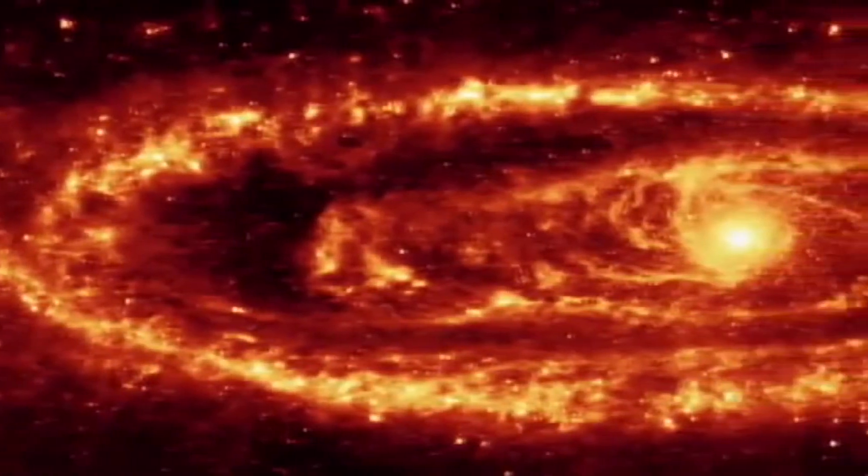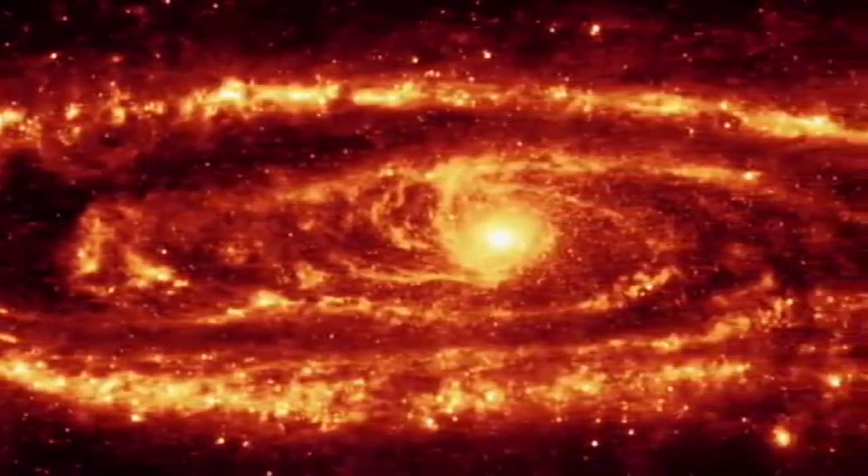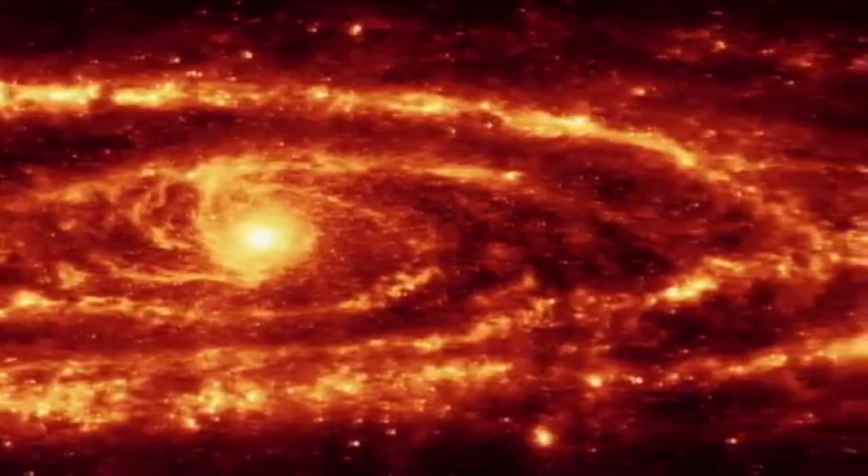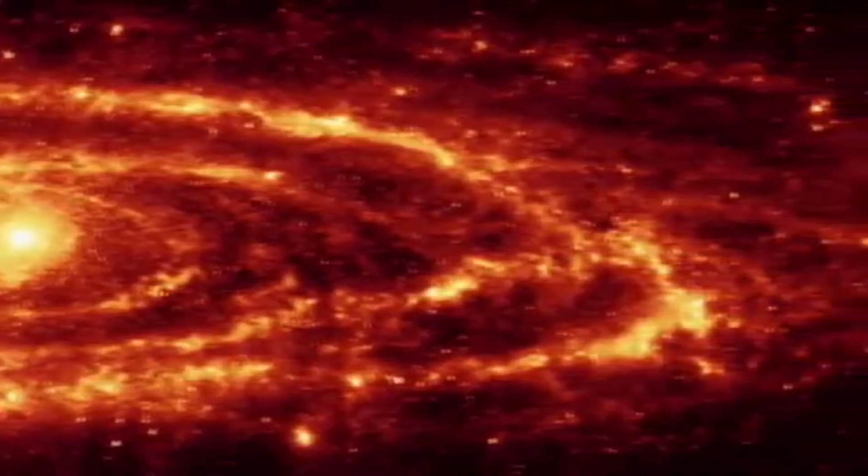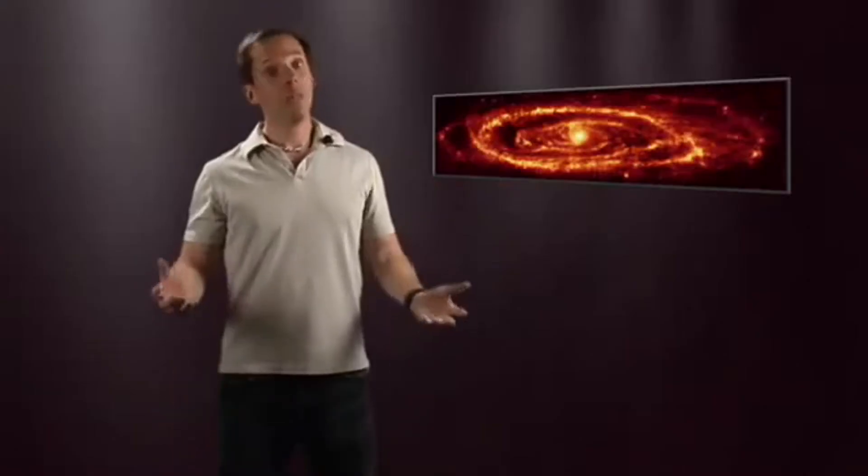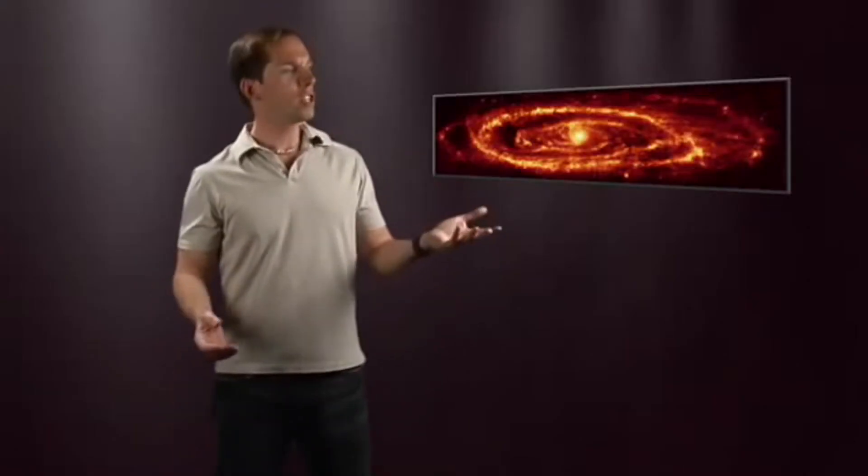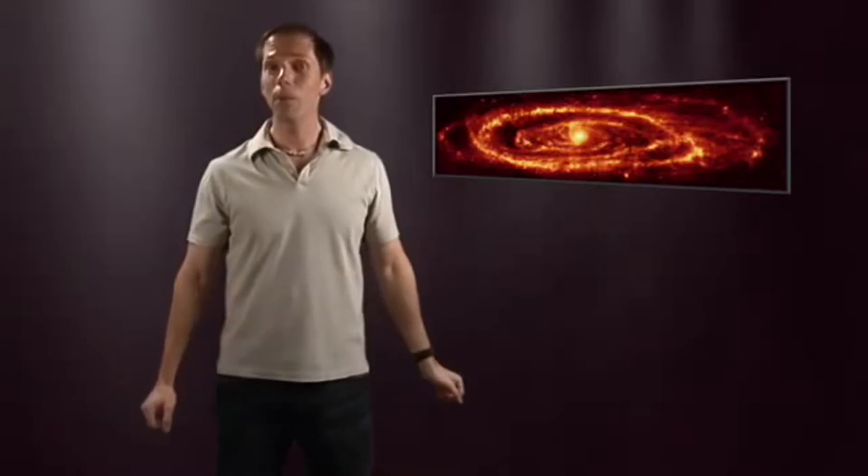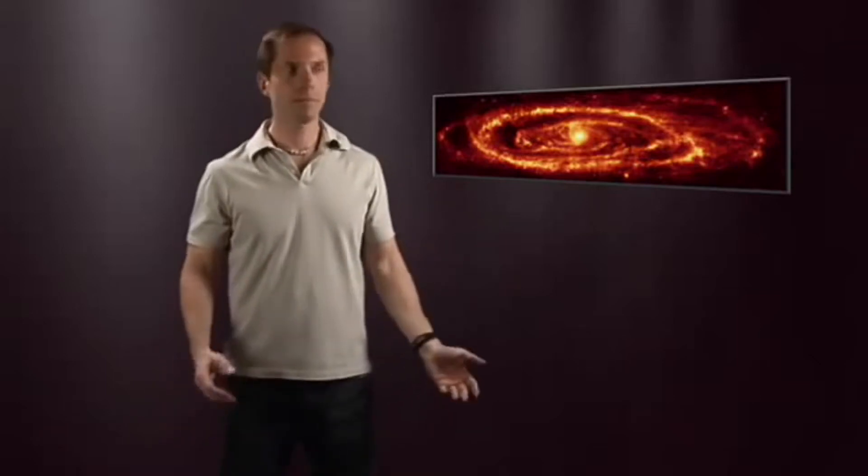At longer wavelengths seen by the MIPS detector, the starlight mostly fades, letting us study the warm dust directly. Without the confusion of stars, we see Andromeda is missing one pretty common element of most spiral galaxies: the spiral.